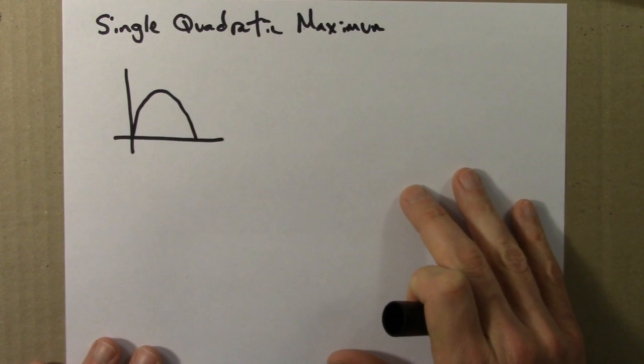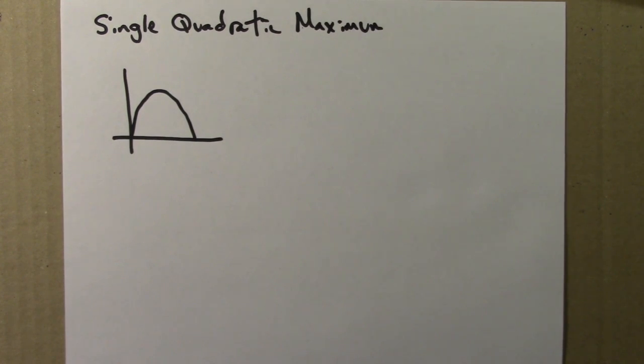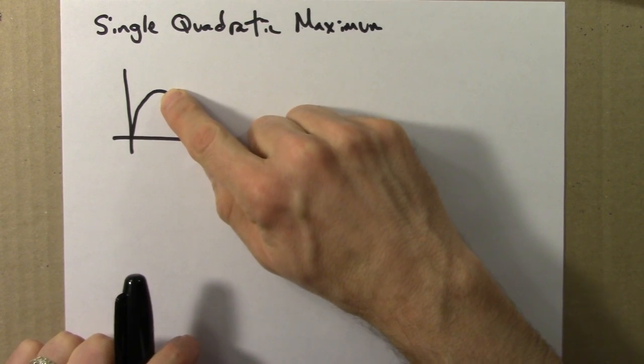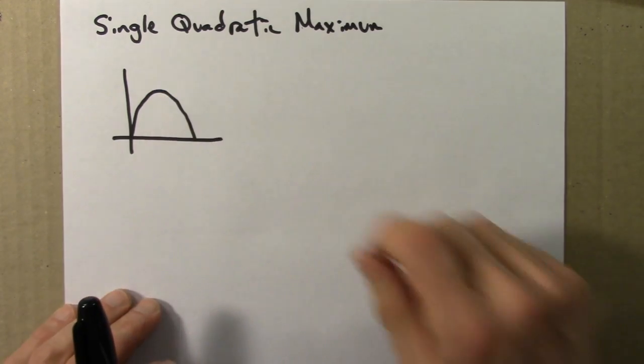So our favorite example is the logistic equation. That's just an upside-down parabola. It has a single maximum right here. And it's quadratic because, well, it's a parabola. It's a quadratic function.